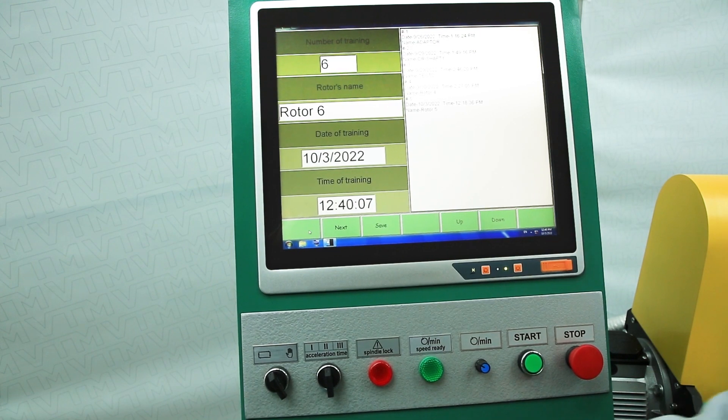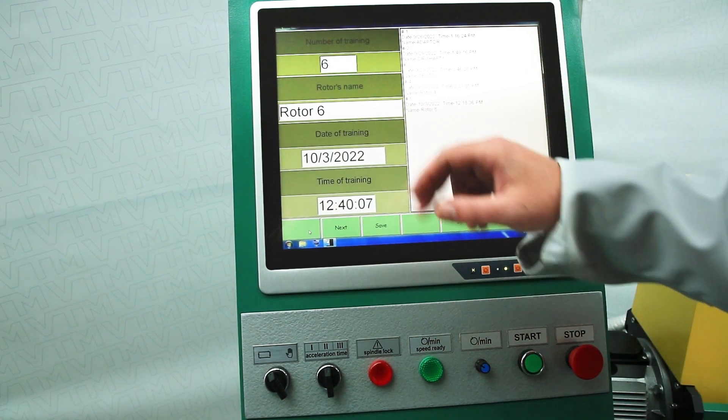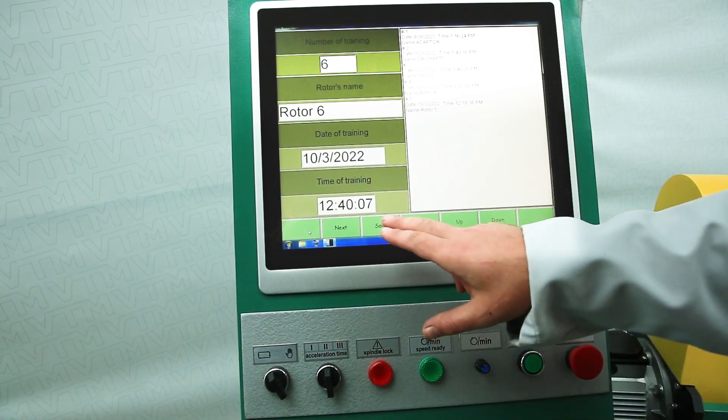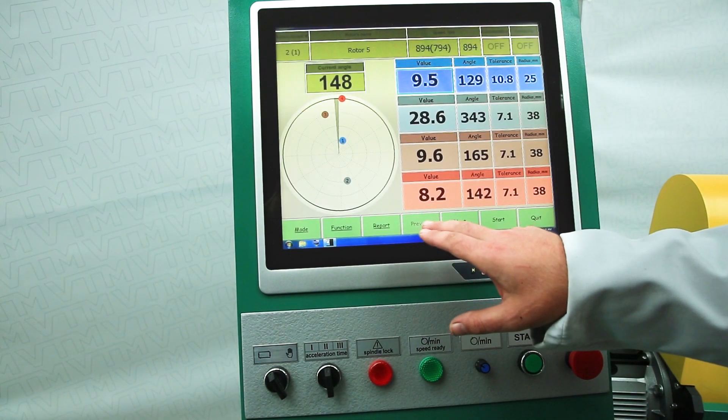Next, we save the rotor under some name. The name will be displayed in the report. Click save and get the initial imbalance of the gimbal in grams.